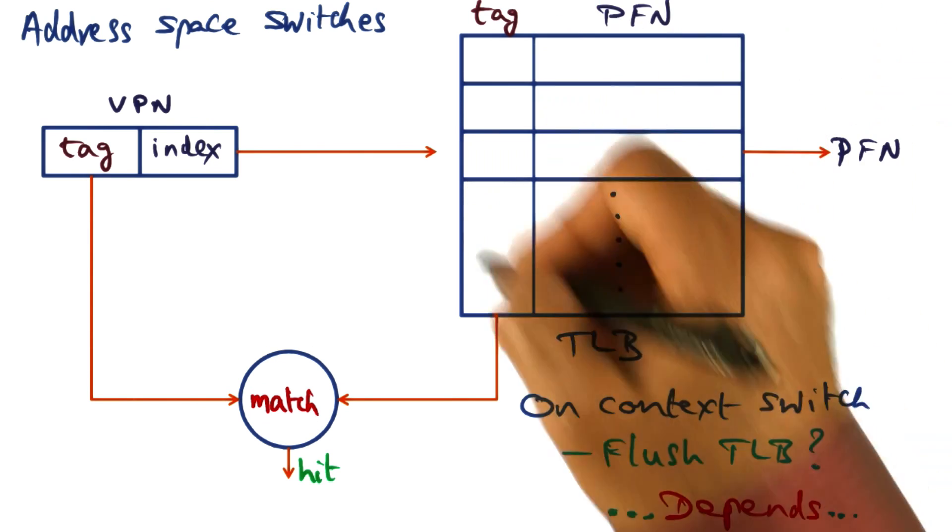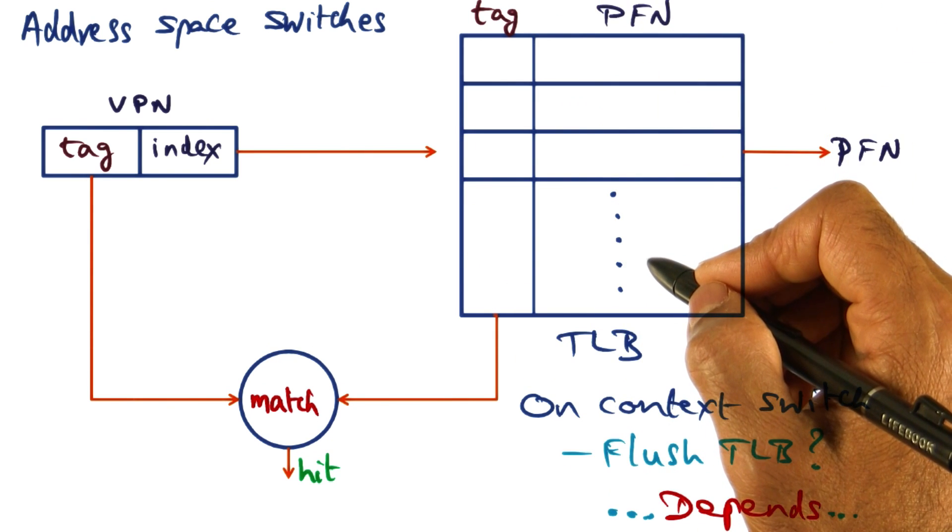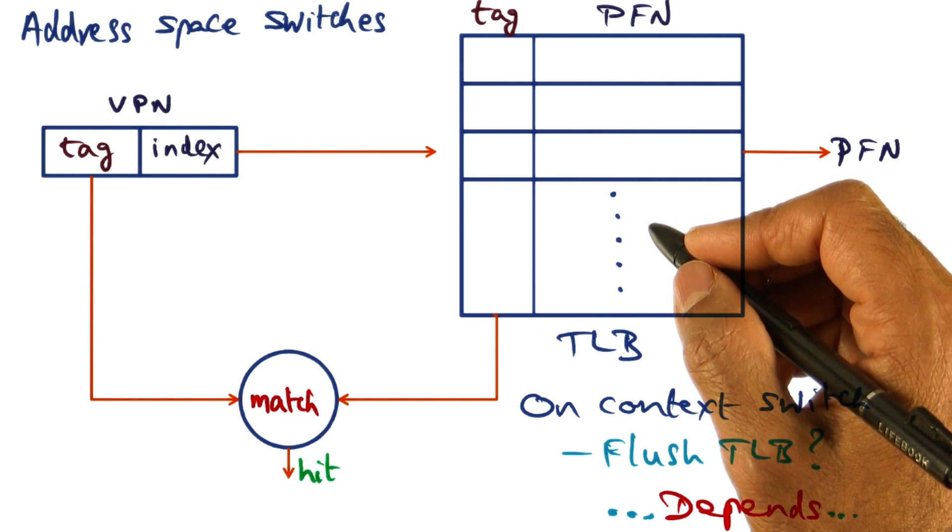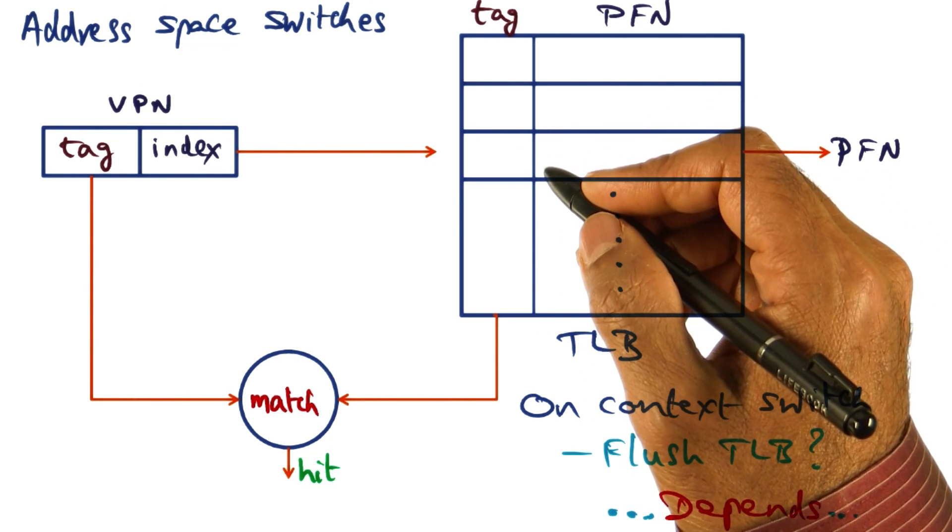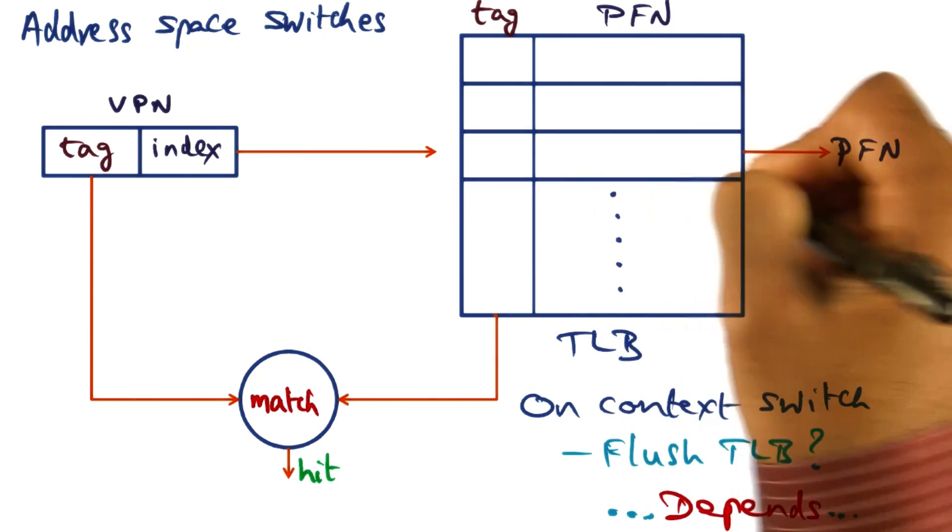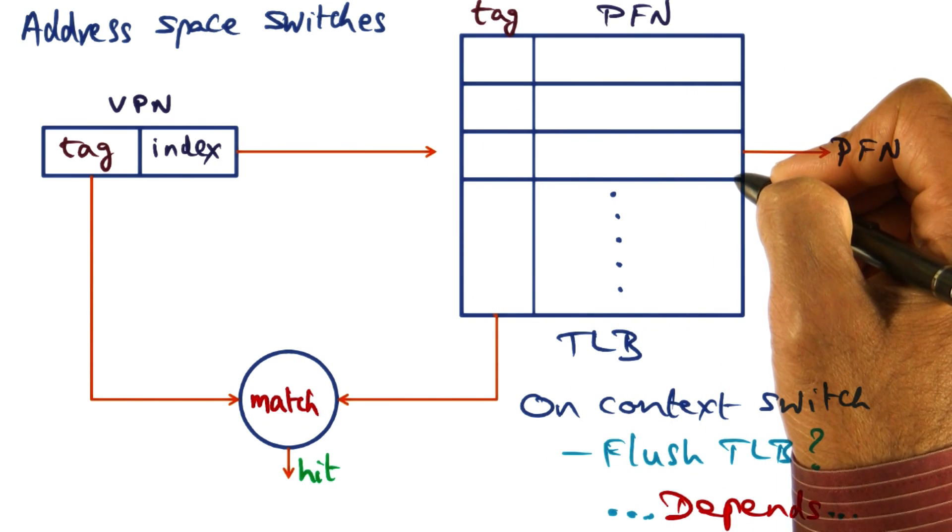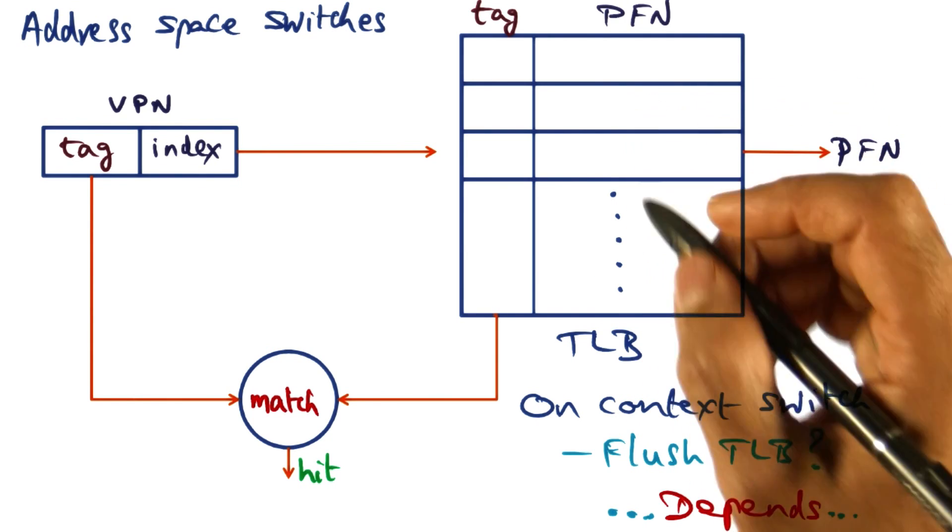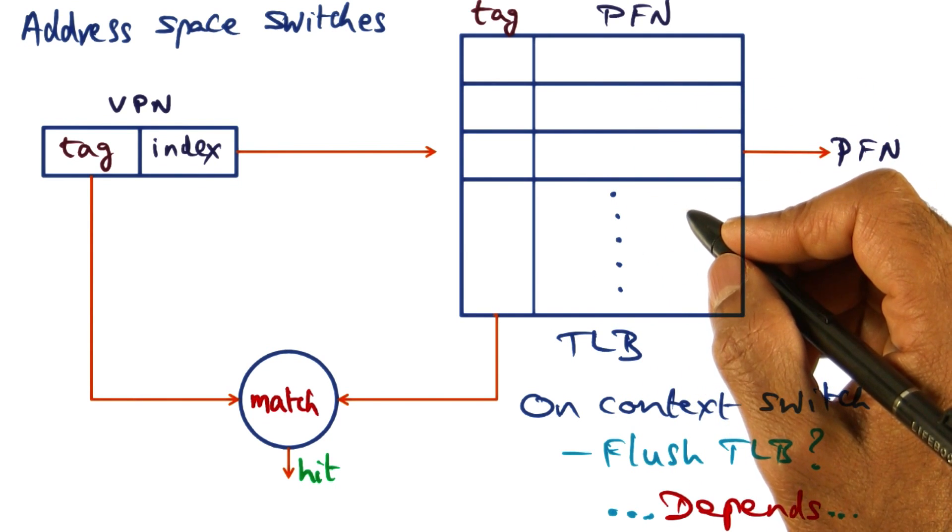then you don't have to flush the TLB. So these are what are called address space tag TLBs, which contain the process ID for which a particular TLB entry is present in the TLB. MIPS architecture, for instance, uses address space tag TLBs.